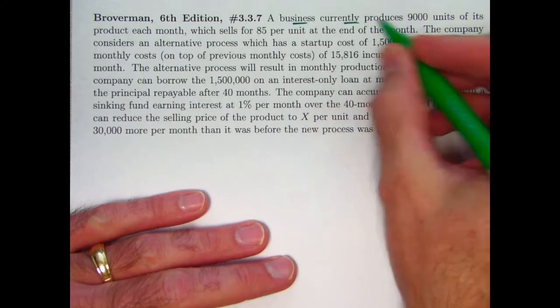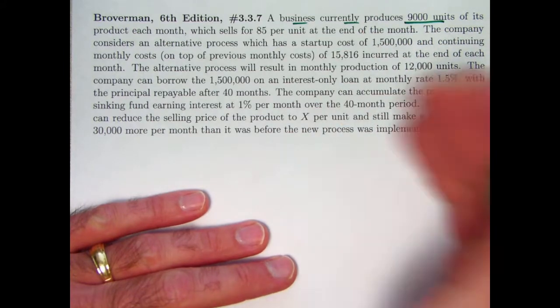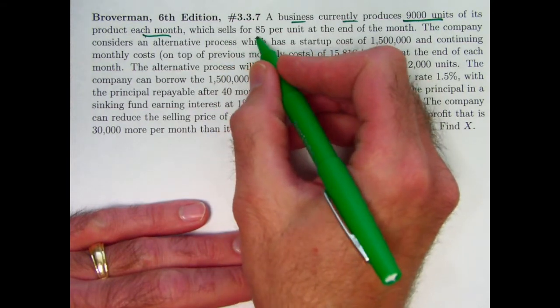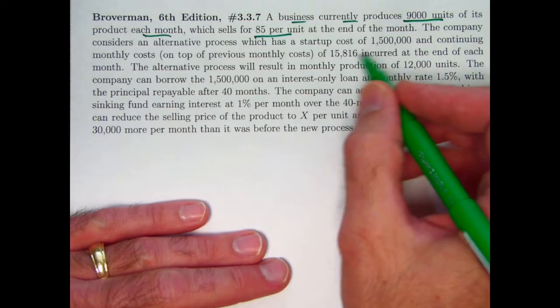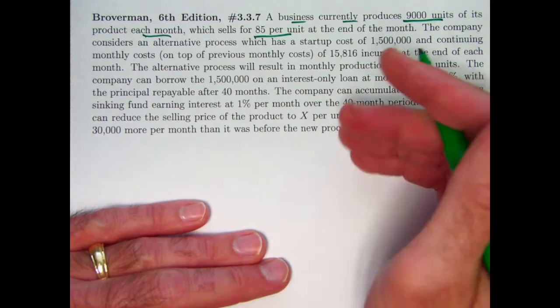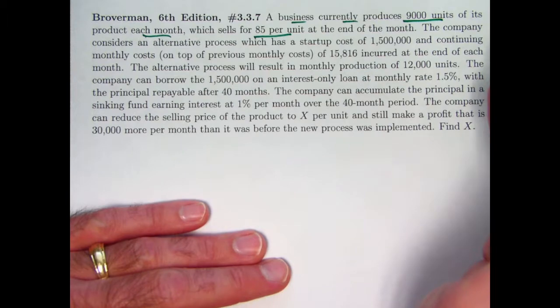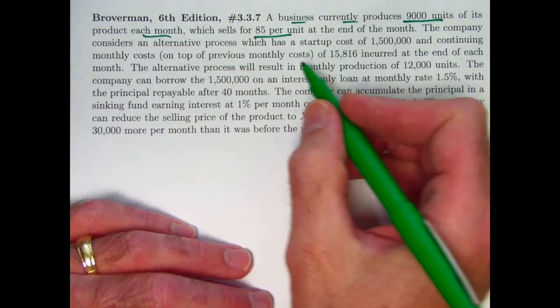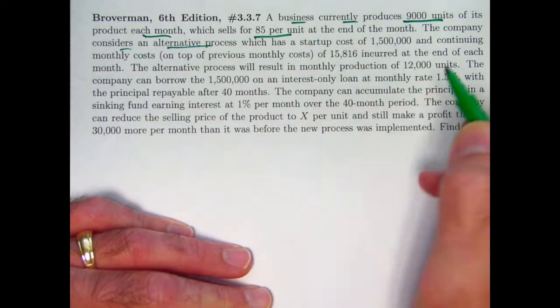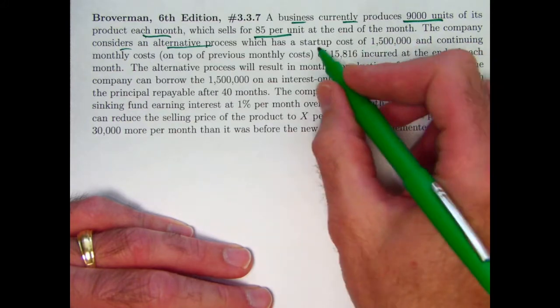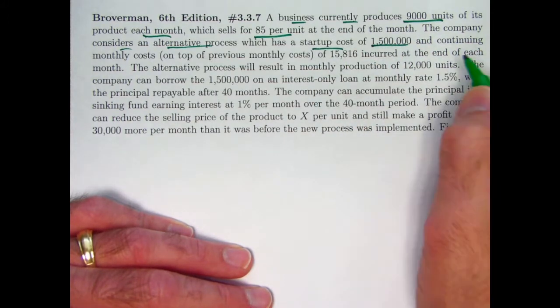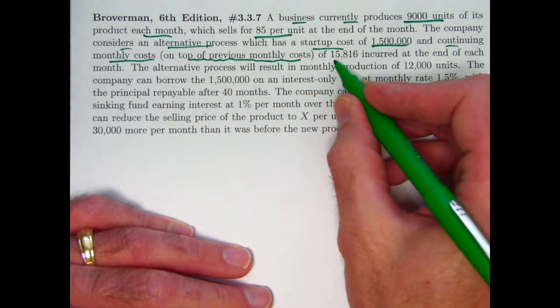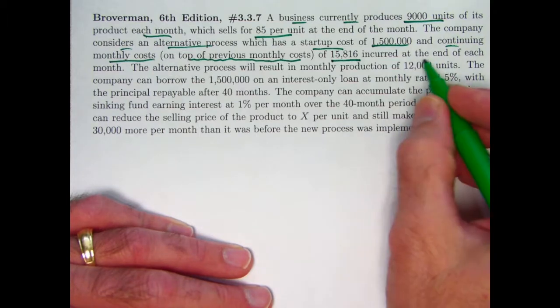A business currently produces 9,000 units of some product each month. Everything here is going to be thought of in terms of monthly. It's going to sell for a price of $85 per unit, and it sells these things by the end of the month, or maybe you think of it as actually selling them at the end of the month. Maybe that's when its billing cycle occurs.